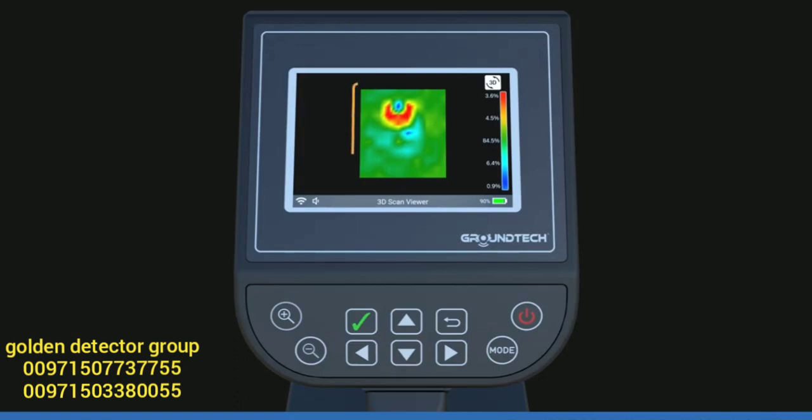On this screen you will see 3D graphics of the data you have collected in the center. The color bar on the right gives information about the soil that was scanned. In the 3D viewer function, the buttons on the device have some functions.